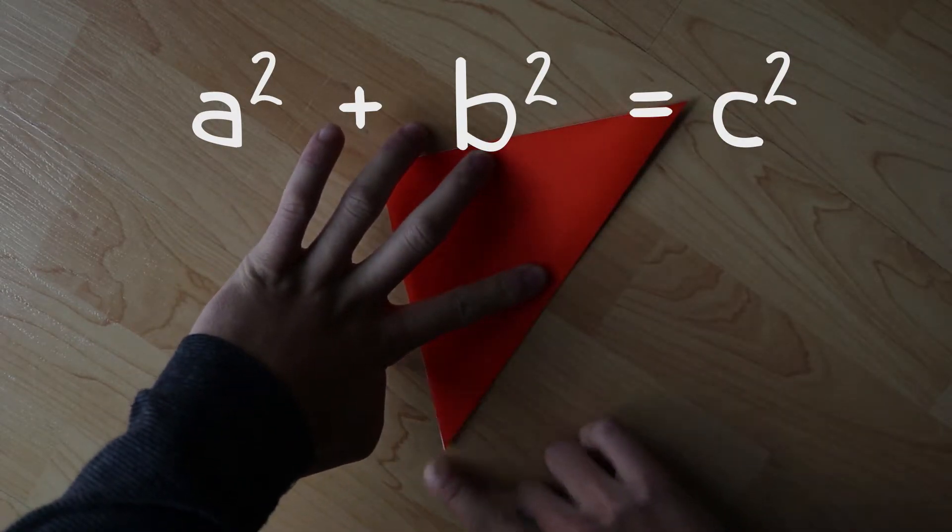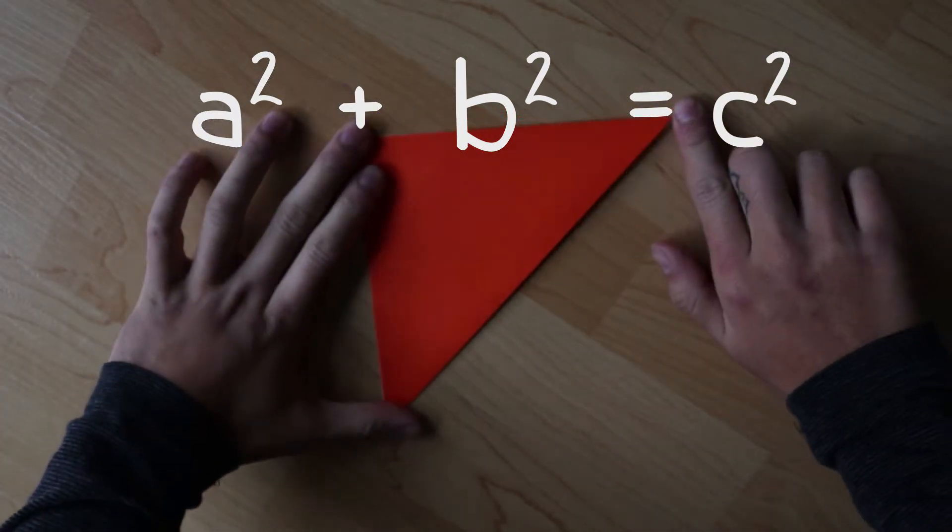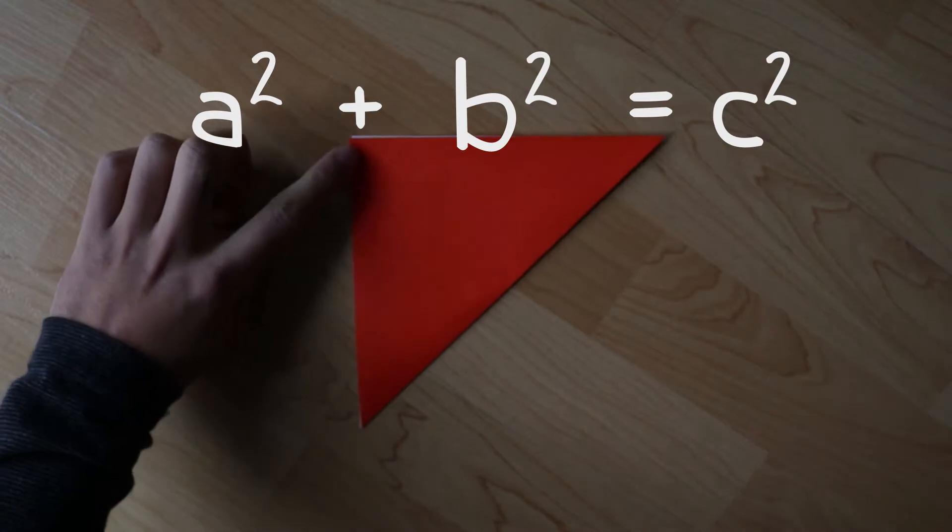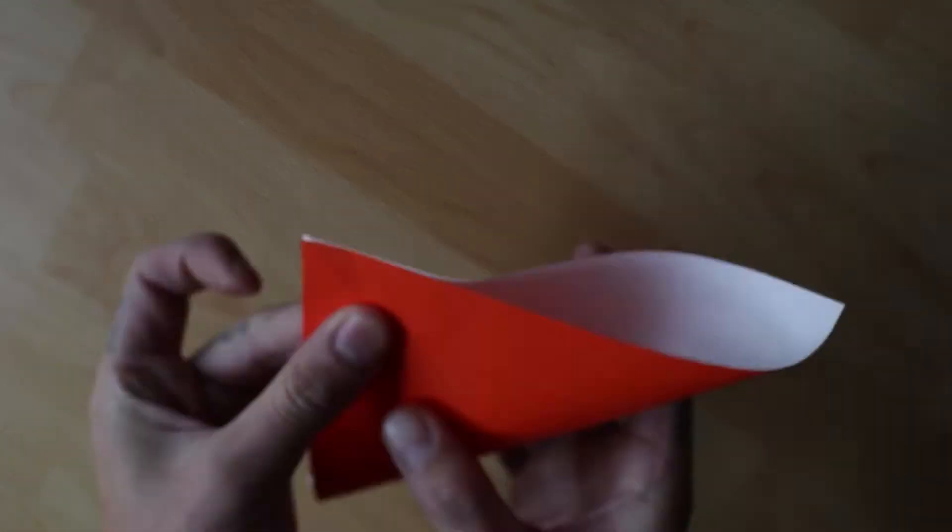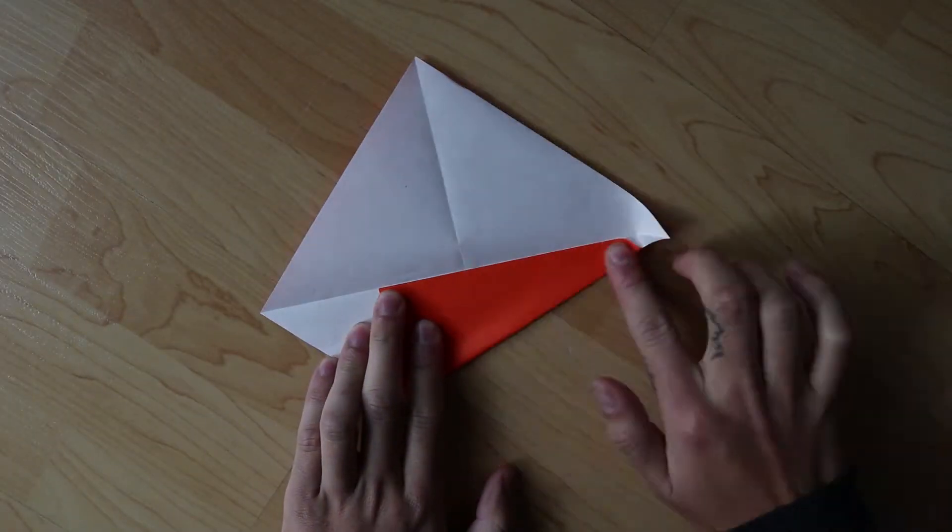Chances are you've encountered the Pythagorean theorem before. It describes a relationship between the side lengths of a right triangle. This relationship has been known for thousands of years, so it should be no surprise that hundreds of different proofs have been discovered.